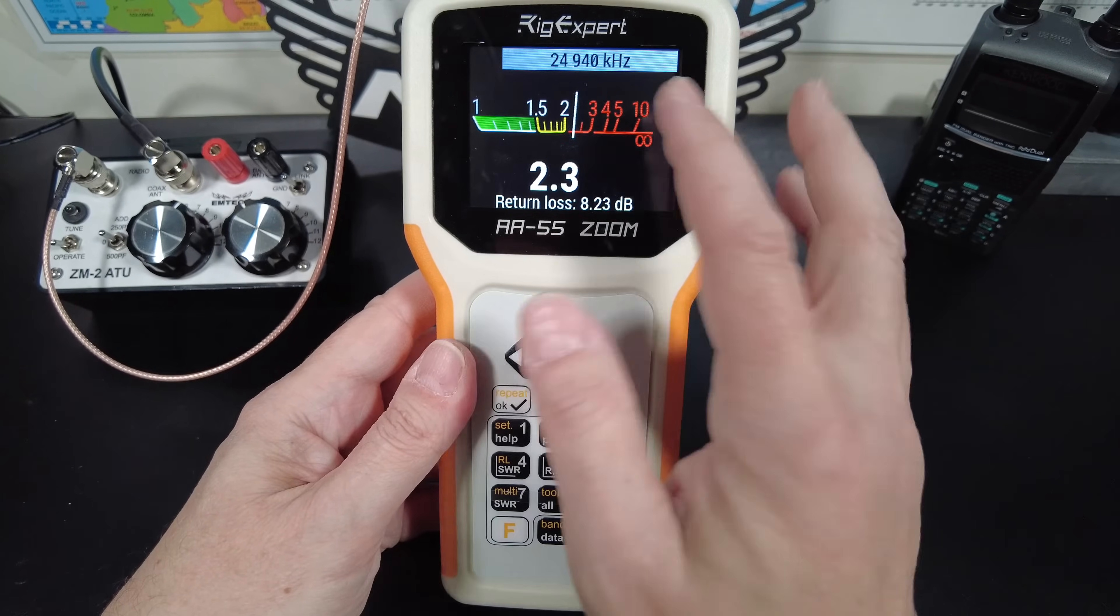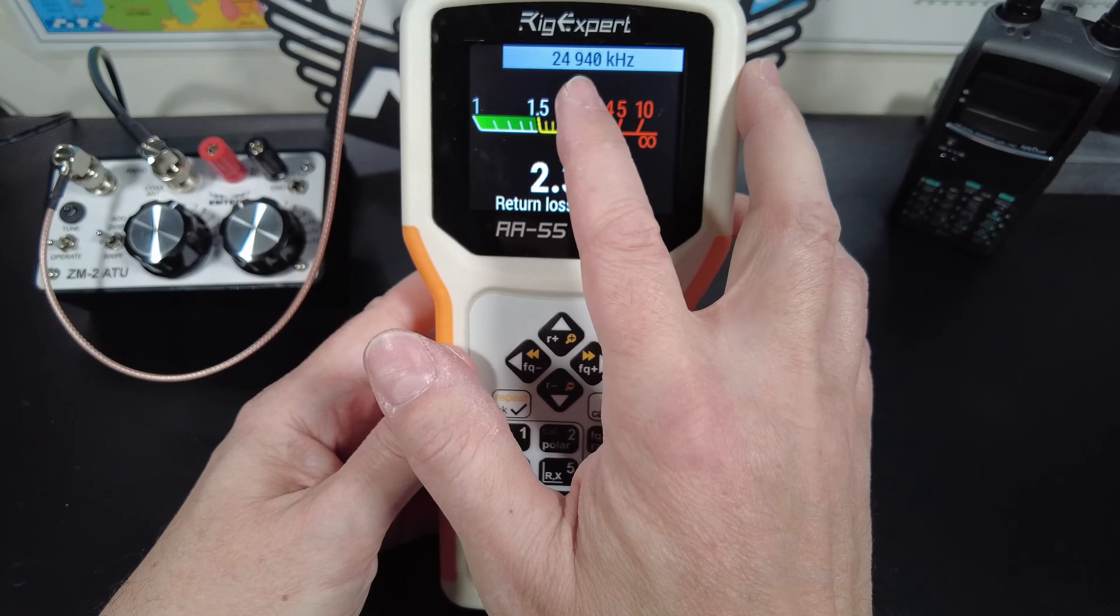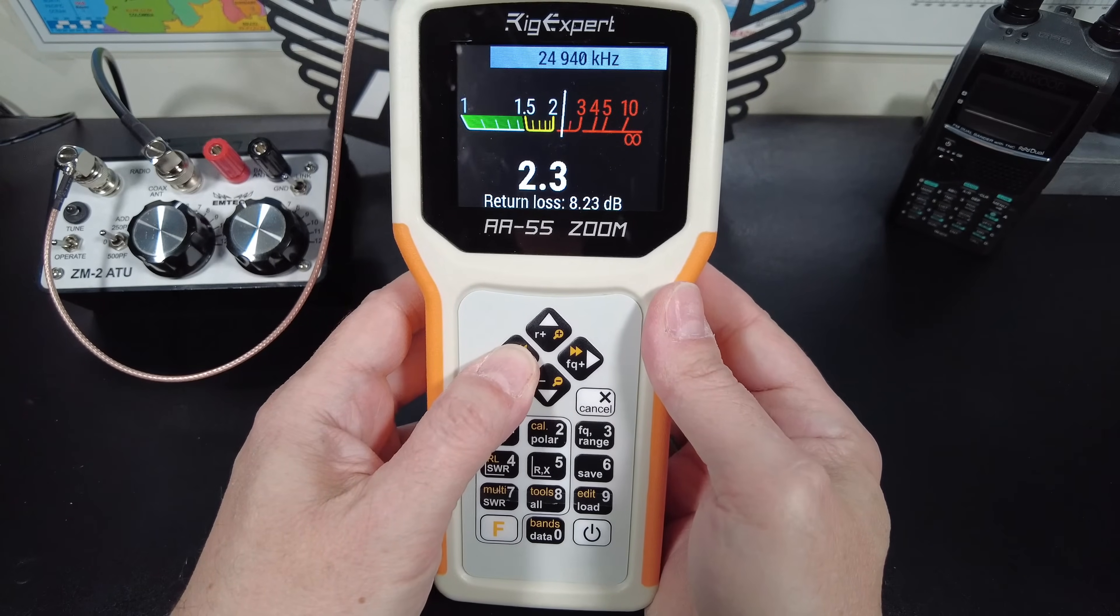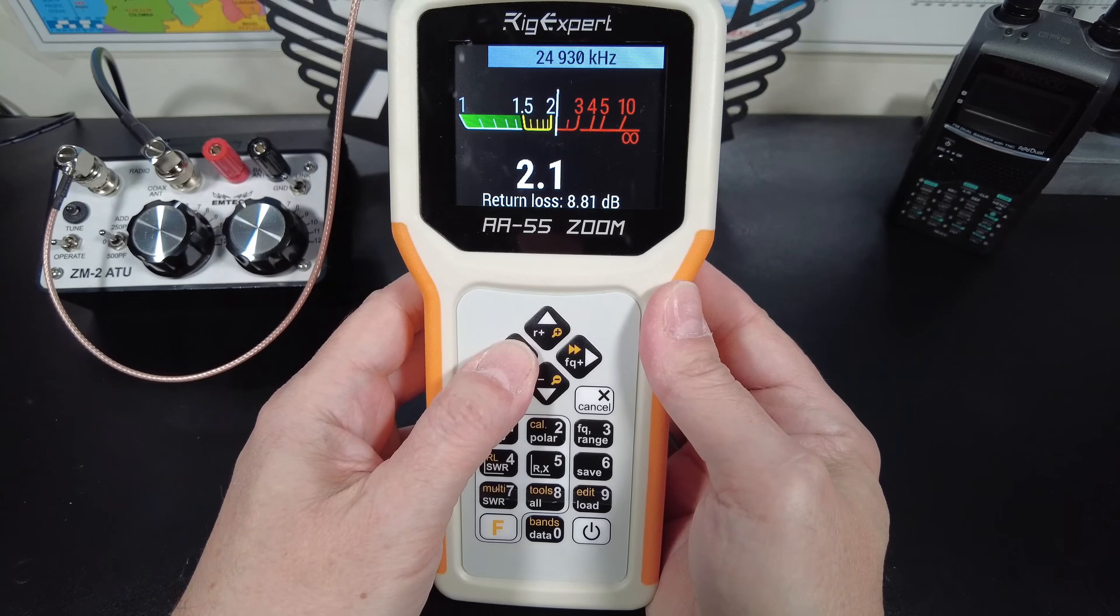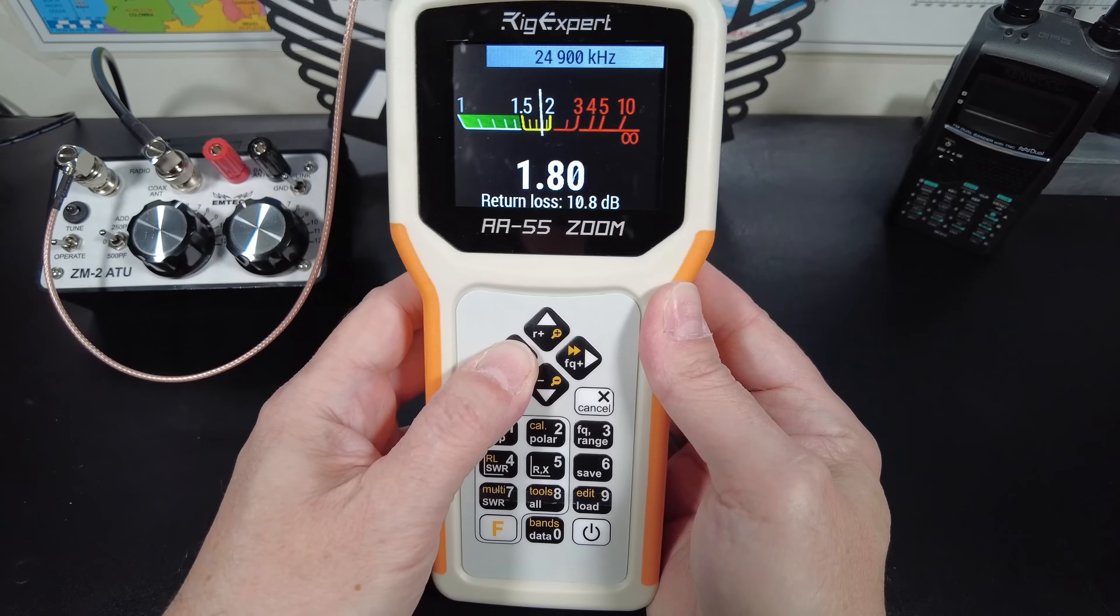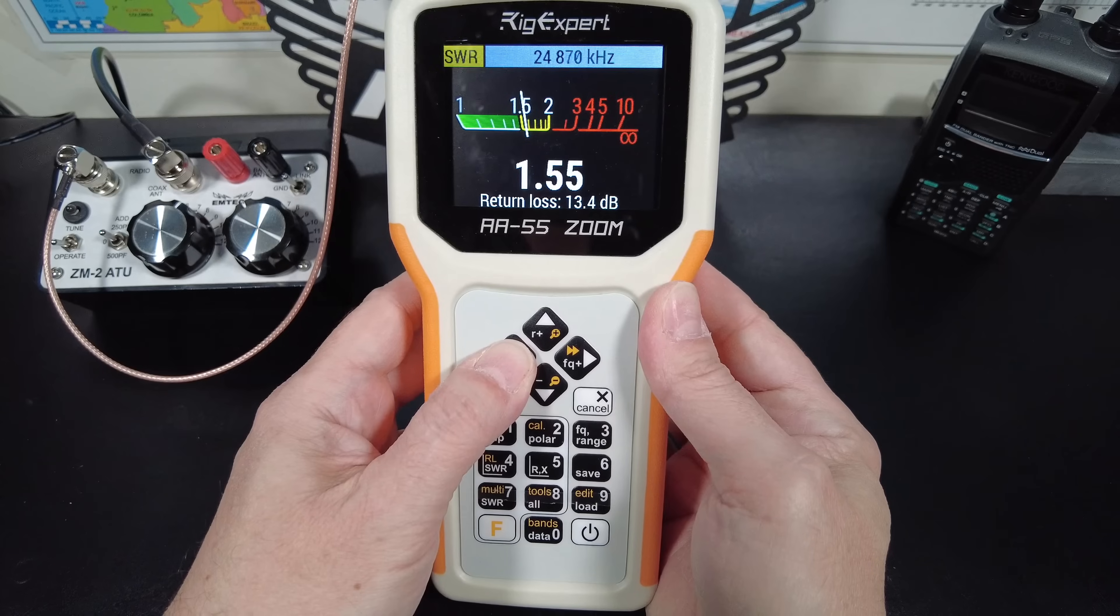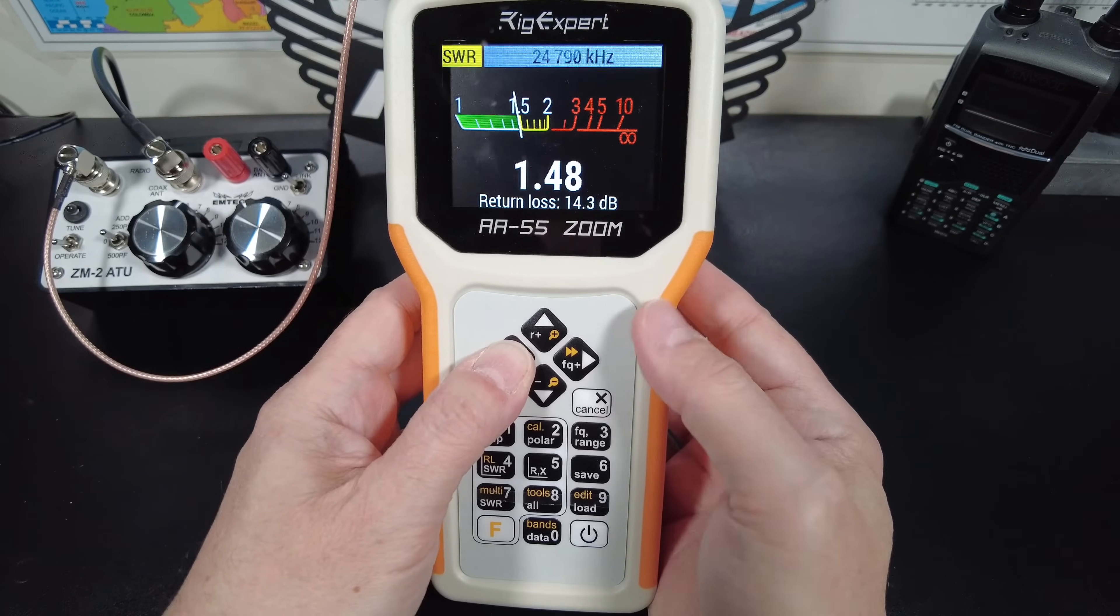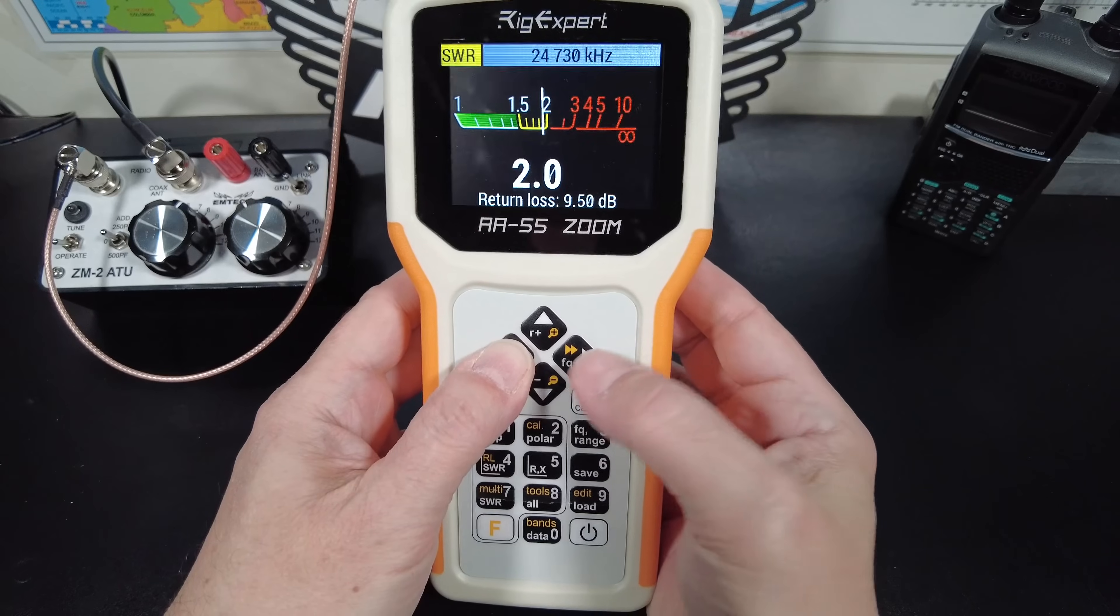Now watch as I vary the frequency. Watch the SWR. Now we're 24930, and it went down a bit. You see, as I move the frequency down, we're heading towards a resonant point on this antenna. And now it's going back up because we're passing the resonant point.